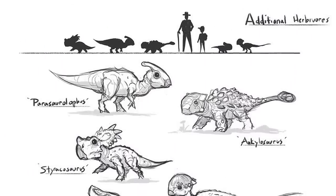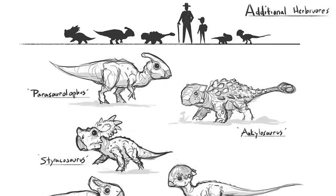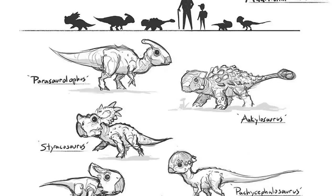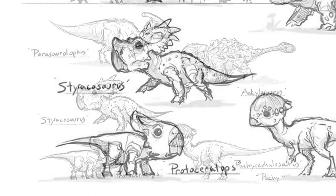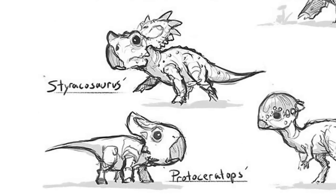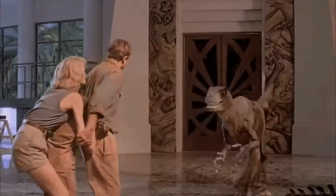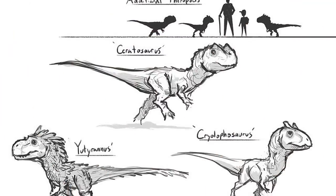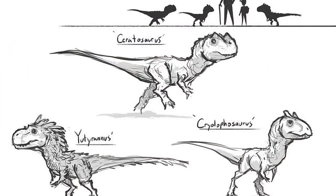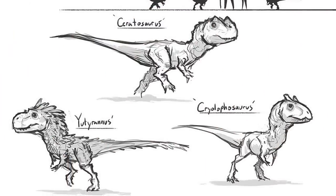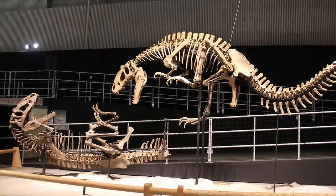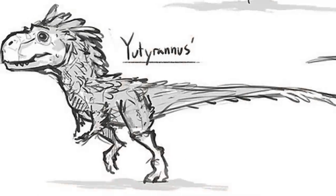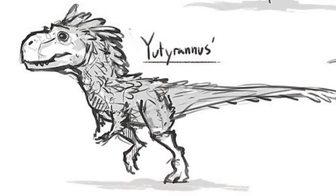Oddly enough, baby versions of the Pachycephalosaurus, Parasaurolophus, Styracosaurus, and Protoceratops were also depicted in this concept art during pre-production, the latter two being extra interesting because it would have been our first time seeing them in the film universe. As for the carnivorous dinosaurs, it actually gets even more interesting. Baby Ceratosaurus, Cryolophosaurus, and even a fully feathered Eutyranus were conceptualized at one stage as well. The Eutyranus in particular I find to be the coolest, but that could just be because it's actually one of my favorite dinosaurs. Seeing it appear in a Jurassic World story would have been personally really unexpected and fun for me.